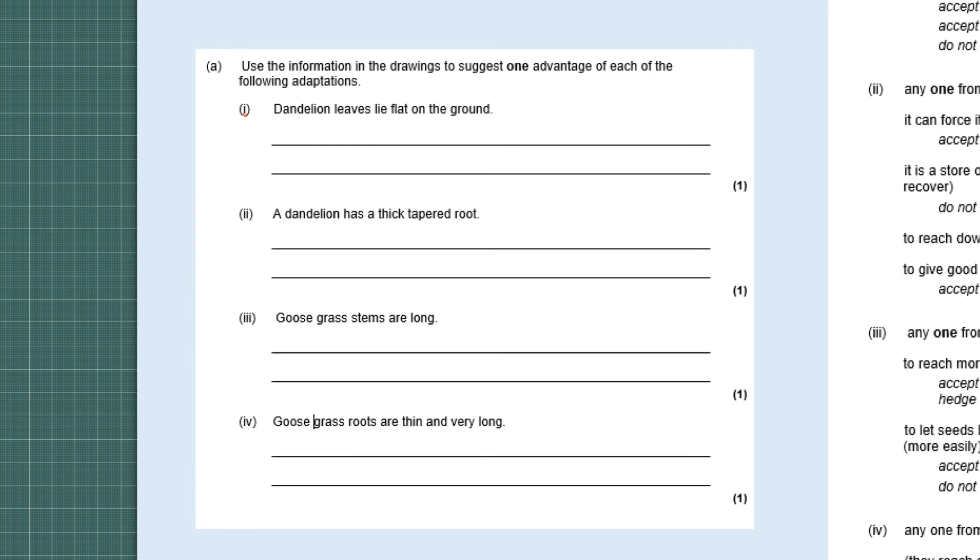Thirdly, goose grass stems are long. The reason they're long in hedgerows is to reach more light. That's the main competition aspect because they're competing against other plants. It could also be to let seeds be caught on animals coats. As you can see in the diagram, they've got seeds that are going to be on long bits of the leaves. Also it could mean that they would be seen more clearly by pollinators such as bees. It then discusses goose grass roots are thin and very long. They're going to be thin and very long because they're going to increase the surface area and allow the roots to find water. I'm going through quite a few adaptations there but you would only need one advantage.